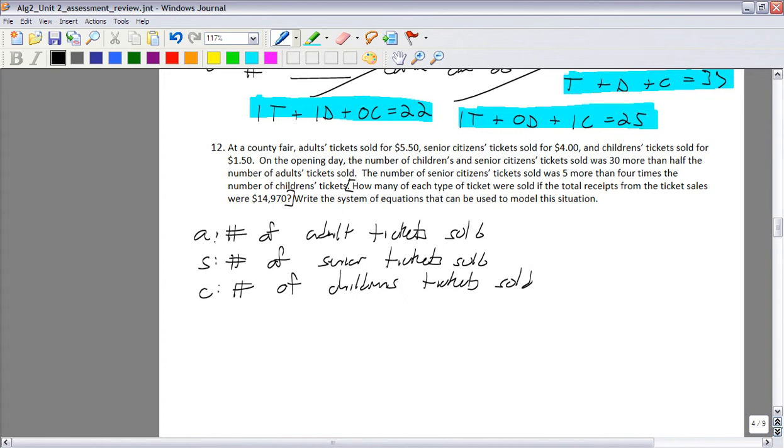Okay. So from that, you can build your equations. All right. And you know that the adult are 550. So $5.50 times the number of adult will get you the profit on the adult. Plus, um, seniors are $4 a piece. And then the children's are $1.50. And they made a total of $14,970. So that's one equation you have. Another one you have is, um, on opening day, the number of children's and senior tickets was 30 more than half the number of adults. So half the number of adults plus 30 is equal to the children's plus the seniors. And you could rewrite that equation. I'd multiply everything by 2. All right. And that would be A plus 60 equals 2C plus 2S. And I'd probably rearrange it.